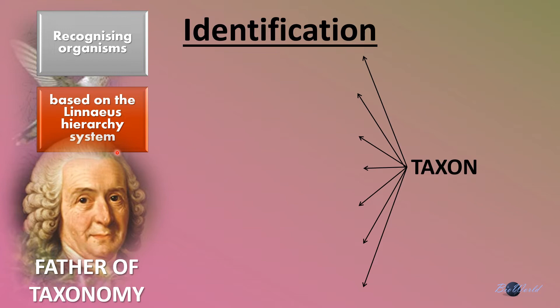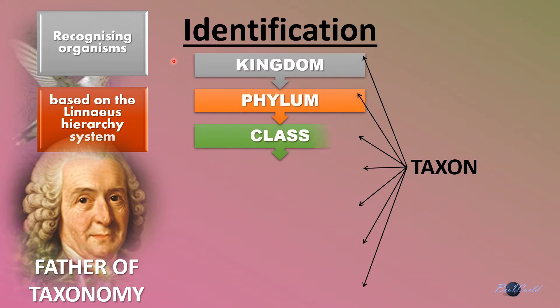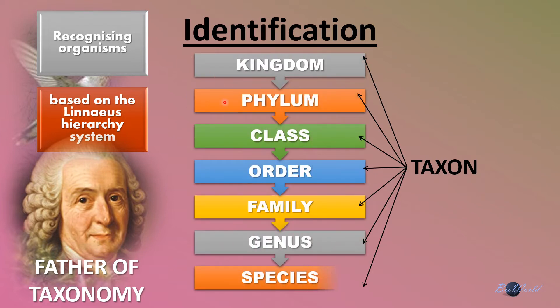You have to memorize all of the taxons. It starts with kingdom, followed by phylum, class, order, family, genus, and species. Let me elaborate further on kingdom and species.